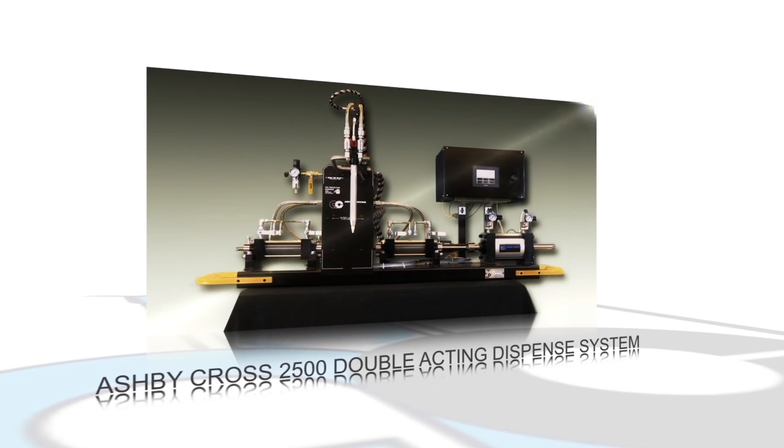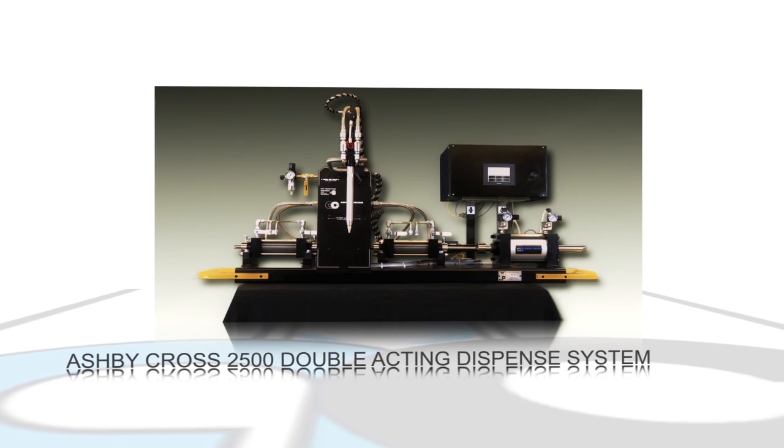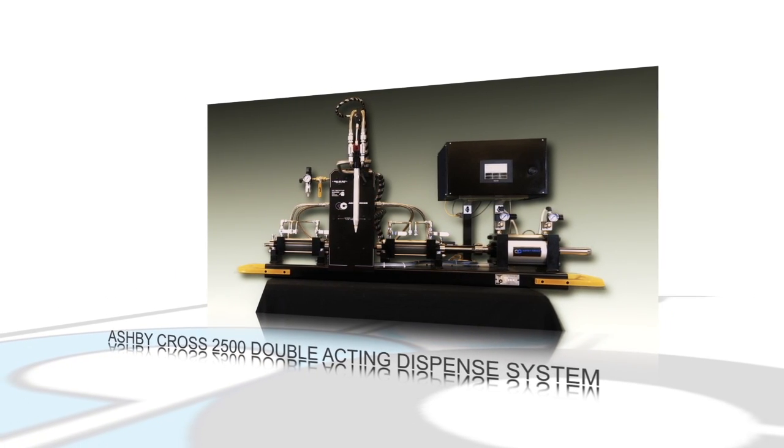The 2500 Double Acting Meter, Mix and Dispense System by Ashby Cross is a high accuracy metering system for two component adhesives such as epoxy, urethane, silicone and acrylic.